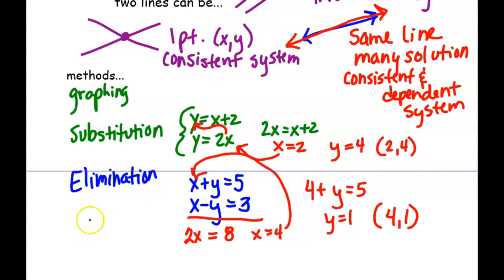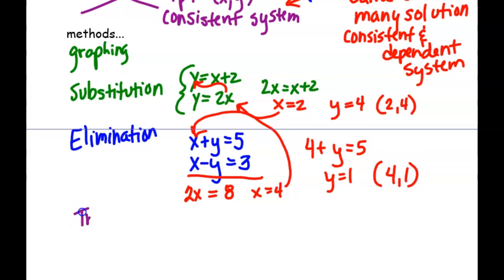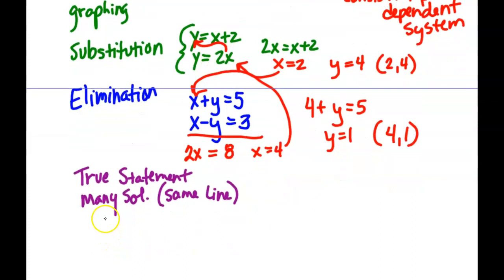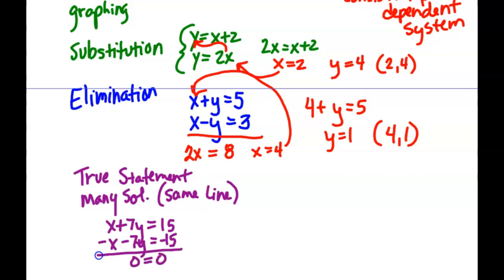Before I move on, I want to talk about what happens when you have an inconsistent system or a same-line situation during substitution or elimination. If you get a true statement, that means many solutions, which means it's really the same line. For example, if it said x plus 7y equals 15 and the other equation said negative x minus 7y equals negative 15, when you added them together you'd get 0 equals 0, which is true — meaning they're really the same line.